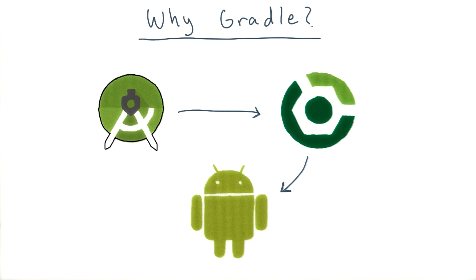Obviously, Google is full of very smart engineers, and one measure of their smarts is that they felt they didn't need to reinvent the wheel with build systems. Gradle solves some of the hardest problems faced by Android developers: how to automate building and testing apps to achieve rapid productivity, and how to manage dependencies and variations that allow professional developers to pump out dozens of variants of their apps with one click.